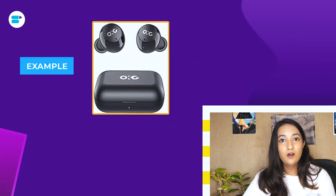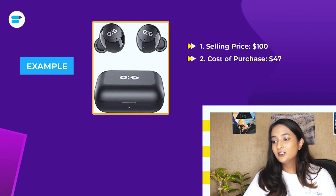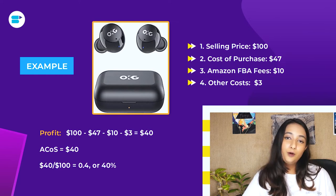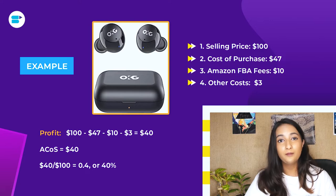Let's consider a hypothetical situation. Imagine you're selling true wireless stereo on Amazon with the following product costs: selling price of $100, cost of purchase $47, Amazon FBA fees $10, and other expenses $3. In this case, your profit margin will be around $40 per sale. In order to remain profitable, your advertising cost — your ACoS — should be less than your profits, meaning less than 40%. If you bid on keywords costing less than 40% of your profit margins, you are in the green.